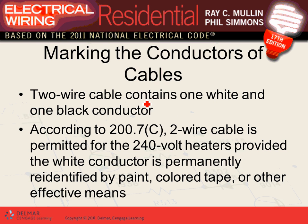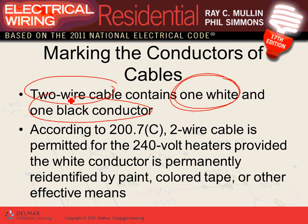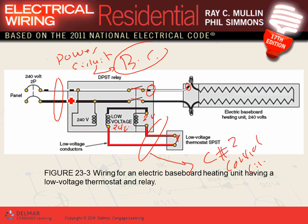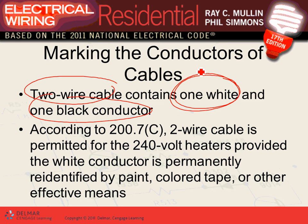When wiring a 240V baseboard heater with 12-2 NM cable — which has only a black and a white conductor — the code allows you to re-identify the white conductor as a hot by wrapping black tape on both ends. This way the white becomes the second hot conductor and you can use it as part of a 240V circuit.